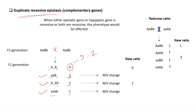Now, how is the test cross ratio affected? The standard test cross ratio is 1:1:1:1. In duplicate recessive, the 1 where both characters are dominant remains as 1. In the remaining three conditions — where B is recessive, where A is recessive, and where both are recessive — these three add up together, giving a new test cross ratio of 1:3.